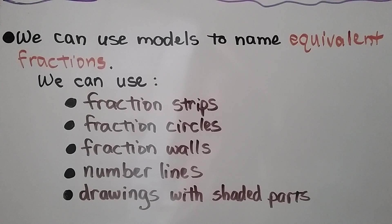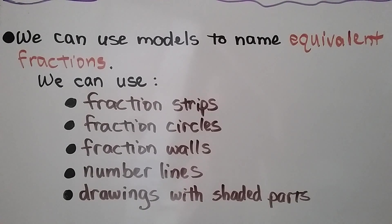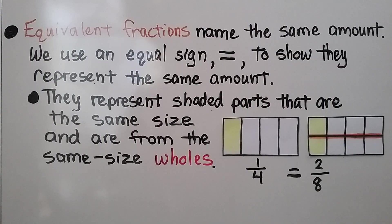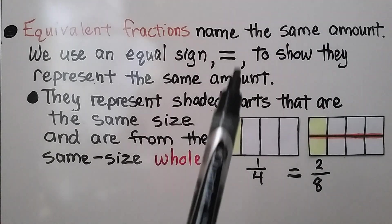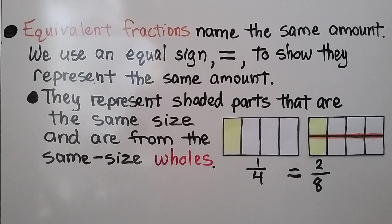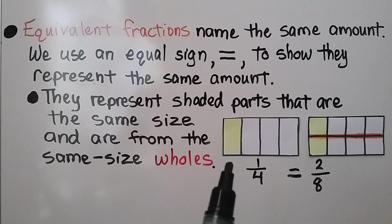We can use models to name equivalent fractions. We can use fraction strips, fraction circles, fraction walls, number lines, and drawings with shaded parts. Equivalent fractions name the same amount — when we use an equal sign to show they represent the same amount, they represent shaded parts that are the same size and are from the same size wholes.